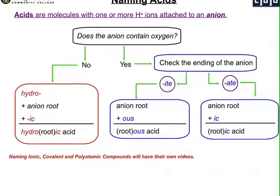Today we'll review naming of acids and bases. We'll start here with acids. An acid is a molecule with one or more hydrogen ions attached to an anion. So what's important when you're naming acids is to pay attention to the anion.